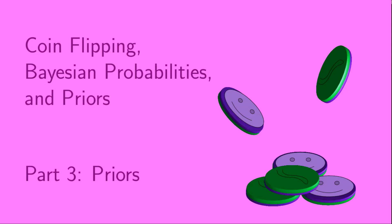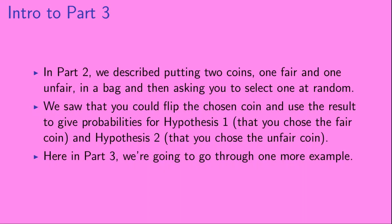Hi, welcome to Coin Flipping Bayesian Probabilities and Priors, Part 3. In Part 2 we described putting two coins — one fair and one unfair — in a bag and then asking you to select one at random. We saw that you could flip the chosen coin and use the result to give probabilities for hypothesis 1, that you chose the fair coin, and hypothesis 2, that you chose the unfair coin.